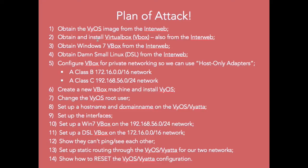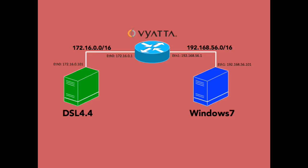Welcome back. I thought a picture would paint a thousand words, so let's take a pause for breath before we start downloading these packages and picture what it is we're about to configure. As you can see, we're going to have a VyOS virtual router running the VyOS community edition. We're going to create two networks — a 172 and a 192 network — and configure two interfaces on the VyOS: one on the 172 network and one on the 192 network, so eth0 and eth1.